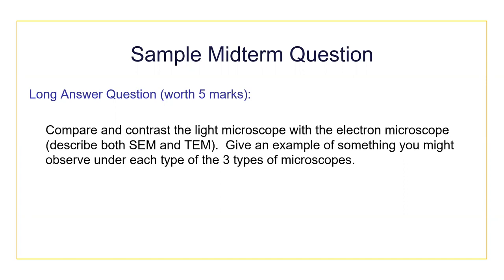Here's an example of a question worth five marks. Five marks means about five complete thoughts — at least five sentences if you answer in sentence form. For a question comparing different types of microscopy, you could answer in the form of a table. You're looking at a minimum of half a page, depending on your handwriting size. We're looking for basically five good points.